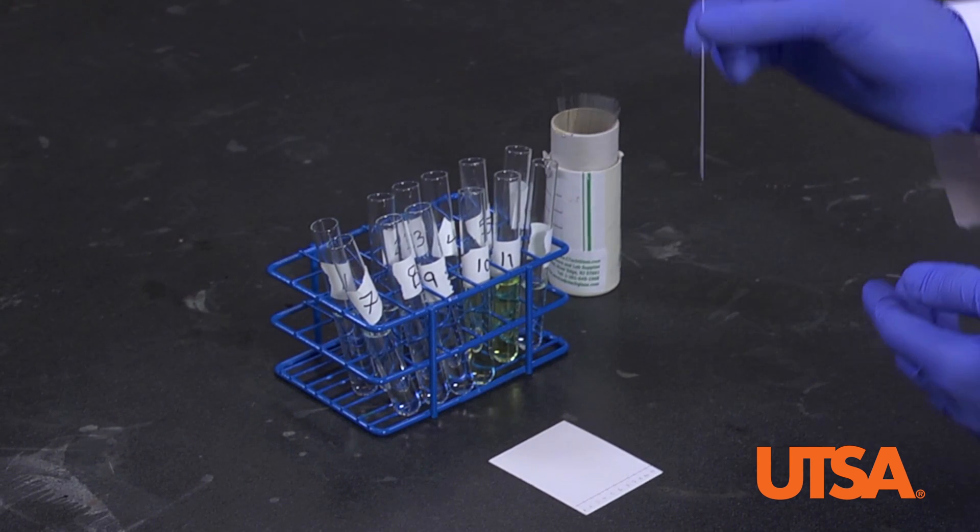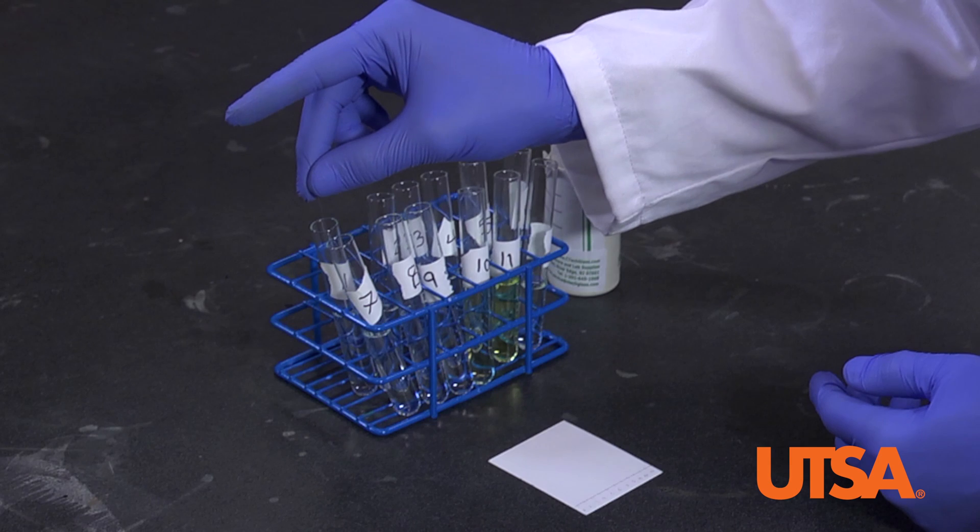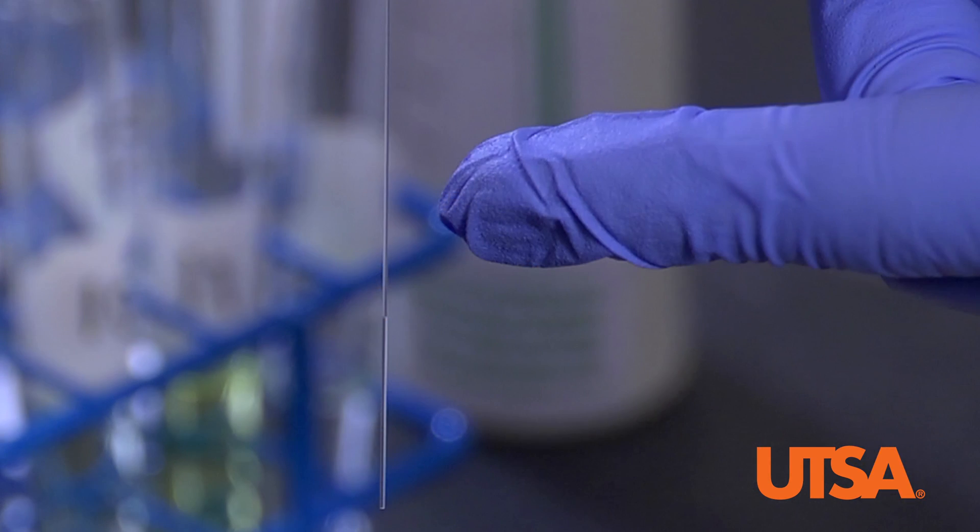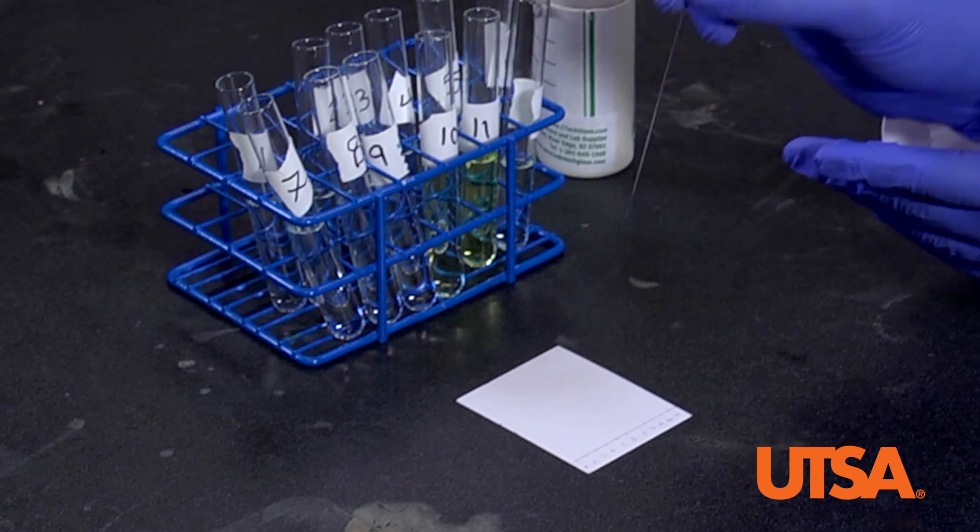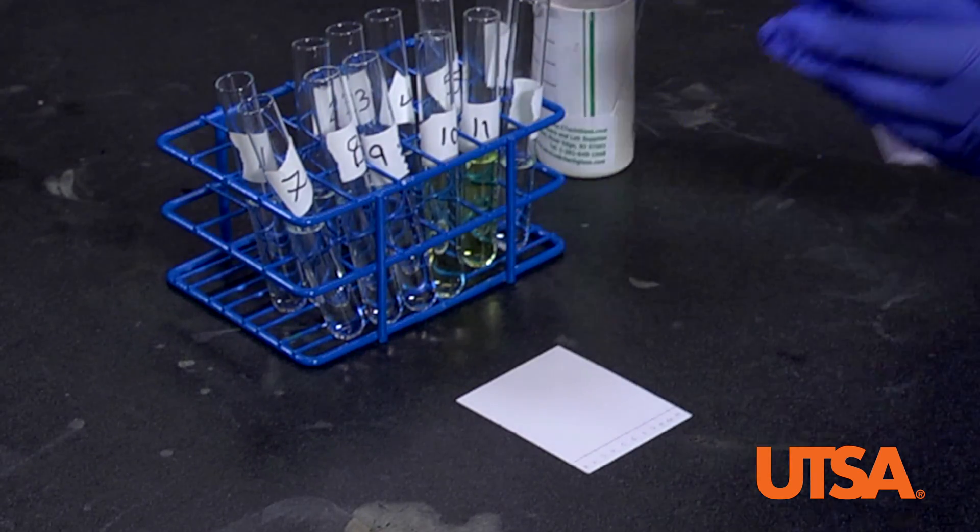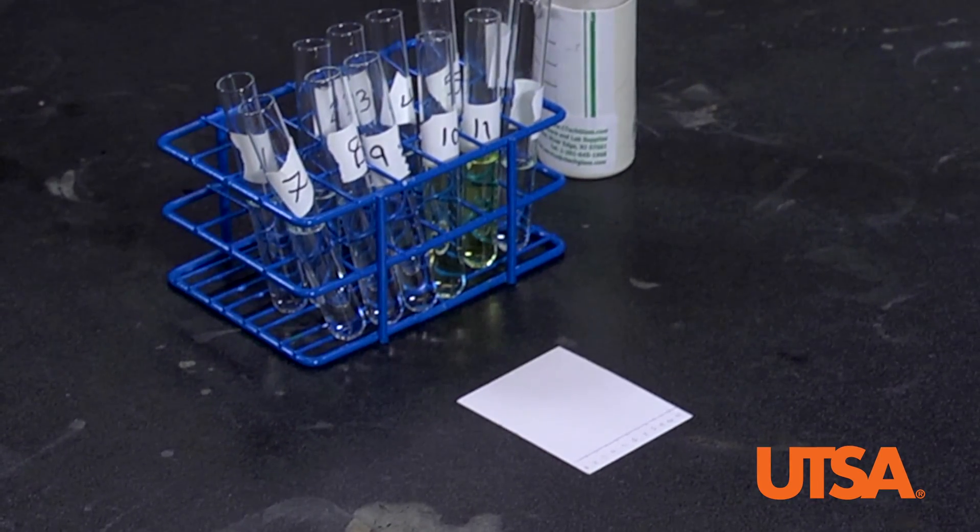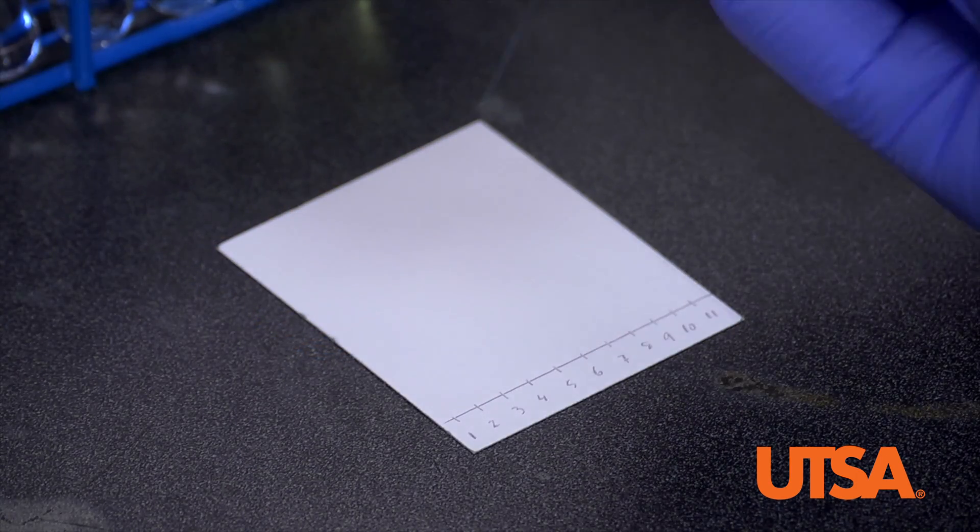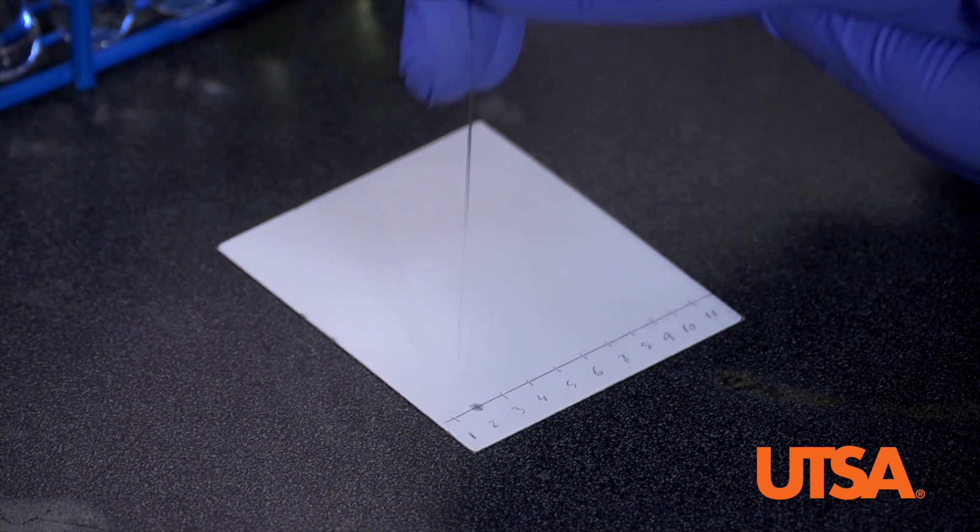Grab a capillary tube and dip it into fraction 1. You will see that the liquid makes its way up the tube. Spot fraction 1 on your TLC plate. Dip it for just a second and switch to a new capillary. Continue by spotting the rest of your fractions onto the TLC.